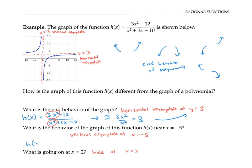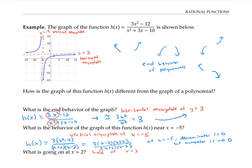The numerator factors — pull out the three, I get x squared minus four. Factoring the denominator, that factors into x plus five times x minus two. I can factor the numerator a little further: that's three times x minus two times x plus two, over x plus five times x minus two. Now, when x is equal to negative five, my denominator will be zero, but my numerator will not be zero. That's what gives me the vertical asymptote at x equals negative five.